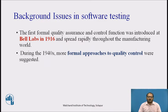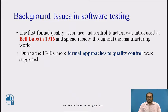Quality assurance is an essential activity for any business that produces products to be used by others. Prior to the 20th century, quality assurance was the sole responsibility of the craftsperson who built the product. The first formal quality assurance and control function was introduced at Bell Laboratories in 1916 and spread rapidly throughout the manufacturing world.